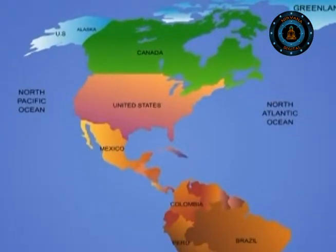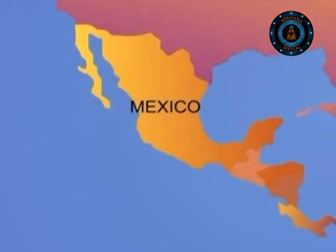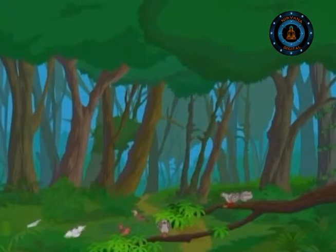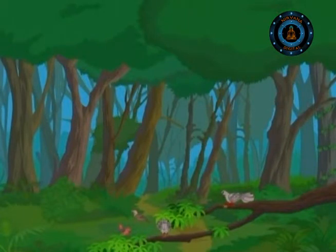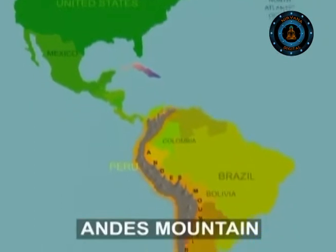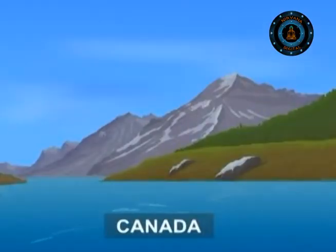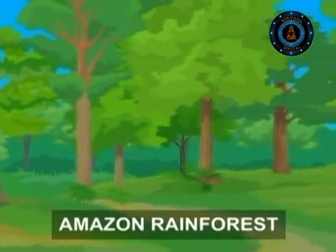And you reach southern Mexico, where deserts and cacti disappear. Here you find wonderful tropical trees with exotic birds chirping and insects running around. Cross this and you arrive in Colombia and the Andes mountain range, which again reminds you of the cold chilly peaks of northern Canada. This descends into the dense swampy forests of the Amazon.